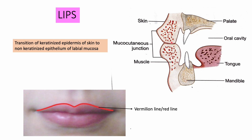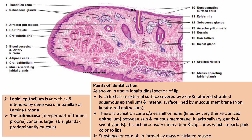The transition zone — also called the vermilion line or red line — marks where this transition begins and is present in both the upper lip and the lower lip. In this picture, you can see the outer surface and the inner surface.